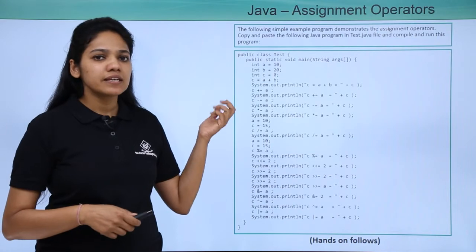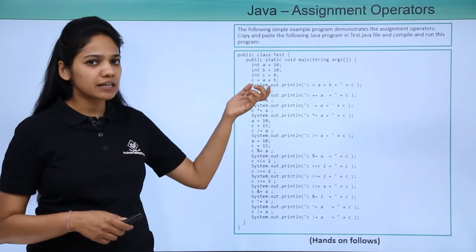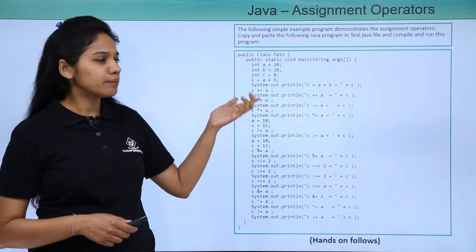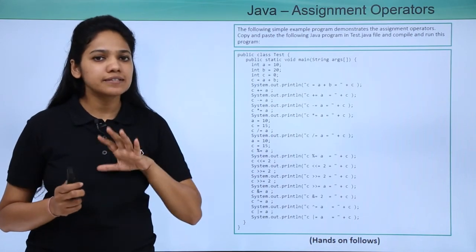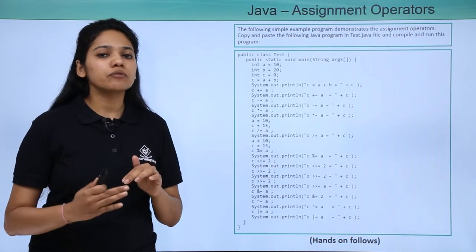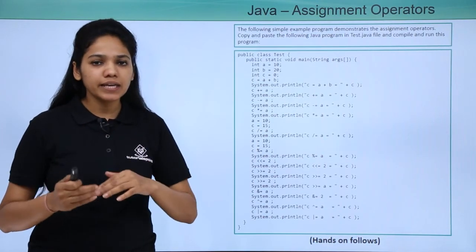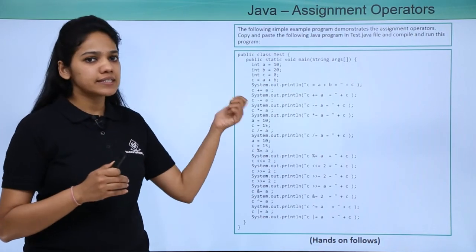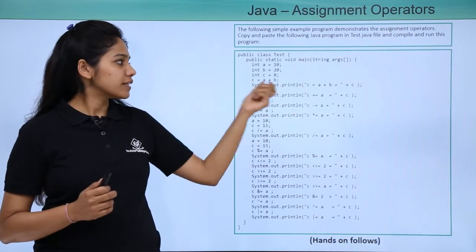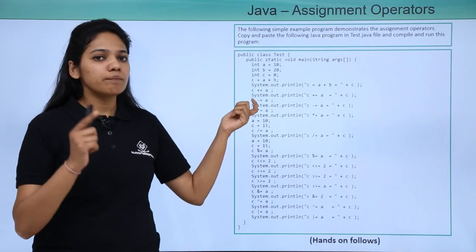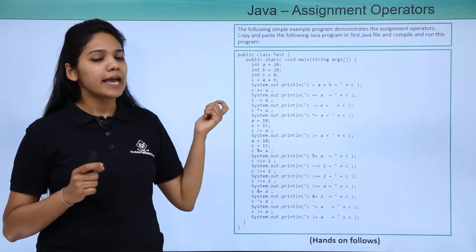We can explain this assignment operator with the help of an example program where we have created a class with certain variables holding values: A is 10, B is 20, and C is 0. C is 0 because we are trying to perform certain operations on A and B and then store the result in C and print it. In the first statement, C is equal to A plus B, so the sum of these values will be stored in C and then we print C.